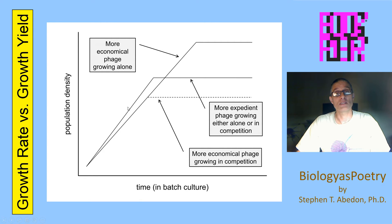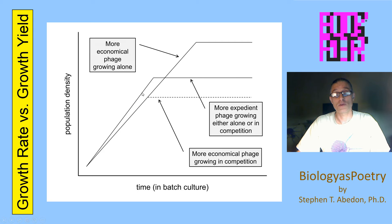The more expedient organism is a faster grower, but it's a less efficient grower, and as a consequence it converts its resources into fewer progeny overall and thus produces a lower yield of progeny at the point where population growth stops.